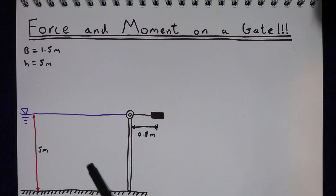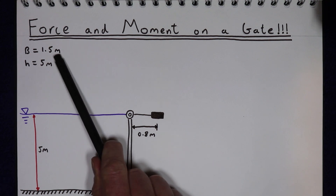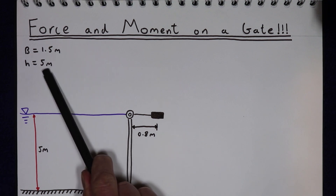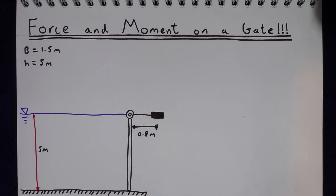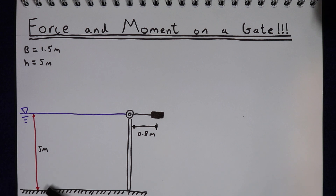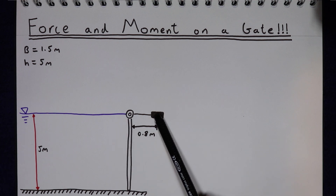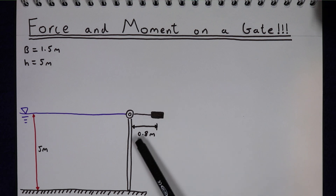In this problem we've got a channel filled with water to a depth of five metres and we've got a gate retaining the water. The gate is 1.5 metres wide and 5 metres high and it's hinged at the top. We're going to assume that the gate has no mass and the hinge is offering no moment by itself. The depth of water behind the gate is applying a moment at the hinge trying to open the gate, and this weight with a lever arm is applying a moment in the opposite direction trying to keep the gate shut.